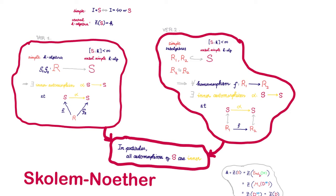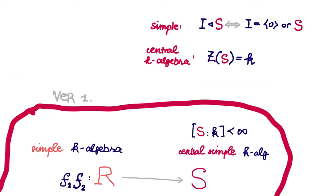So what's the theorem about? Roughly speaking, the Skolem-Noether theorem classifies all the automorphisms of a central simple k-algebra. It says that all automorphisms of such a central simple k-algebra S are going to be inner. That is, they are going to be given by conjugation by elements of S. Recall that a ring is called simple if it has no non-trivial two-sided ideal, and a k-algebra is called central if its center is equal to k.